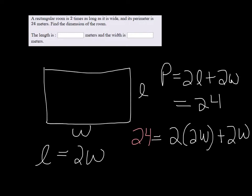I'm going to turn the equation around, so we get 4W plus 2W equals 24.